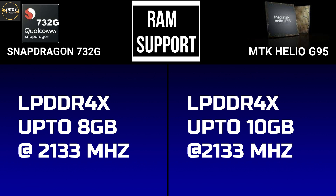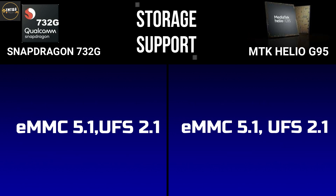For RAM support, the Snapdragon 732G supports LPDDR4X RAM up to 8GB. The Helio G95 supports LPDDR4X RAM up to 10GB, at a frequency speed of 2133MHz.